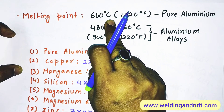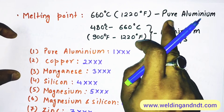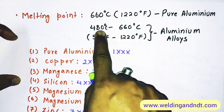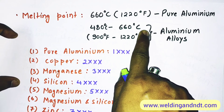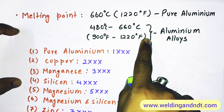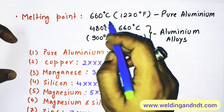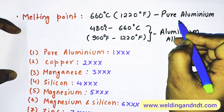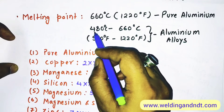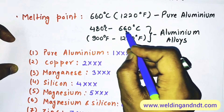The melting point of pure aluminum is 660°C, which is 1220°F. The melting point of aluminum alloys varies from 480°C to 660°C, or 900°F to 1220°F. As you can see, the melting point of pure aluminum is always higher compared to its alloys.